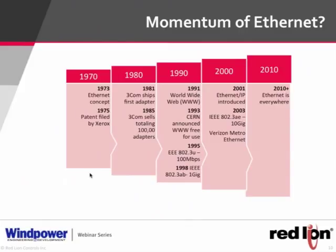In the 2000s, EtherNet/IP was introduced by Rockwell and later handed to ODVA, which now manages it. In 2003, 10-gigabit capability emerged. Metro Ethernet is also notable — previously, Ethernet was only at the endpoints and different protocols were used in between, but Metro Ethernet makes it end-to-end Ethernet all the way through, and it's growing fast because it's easy.